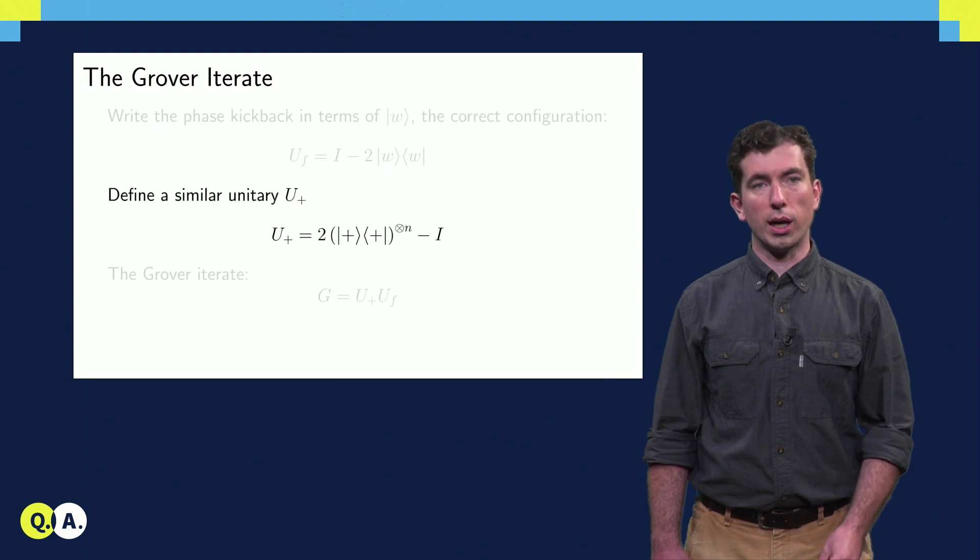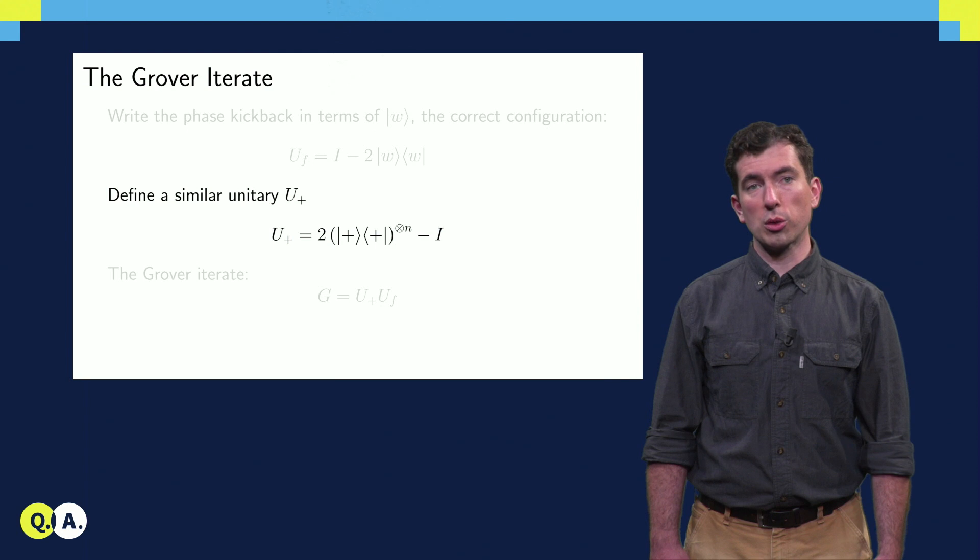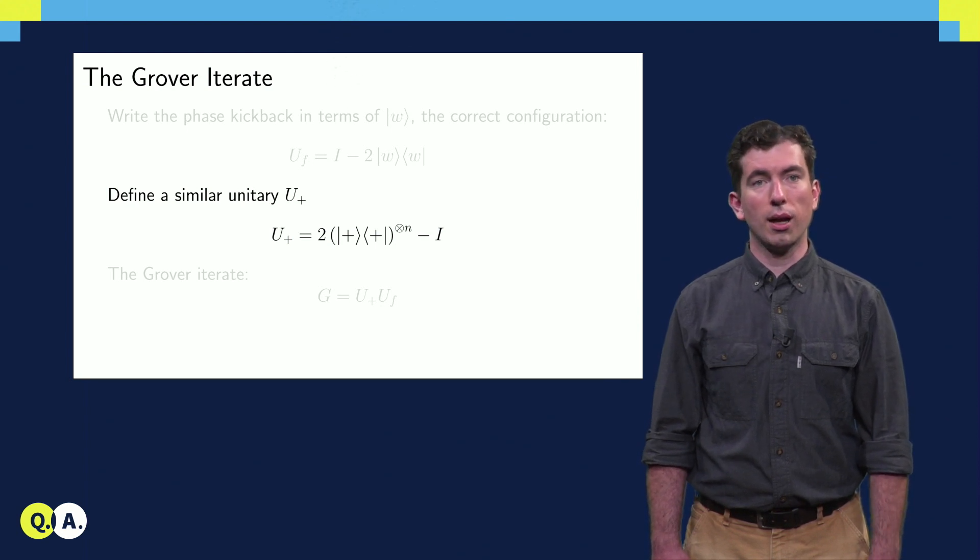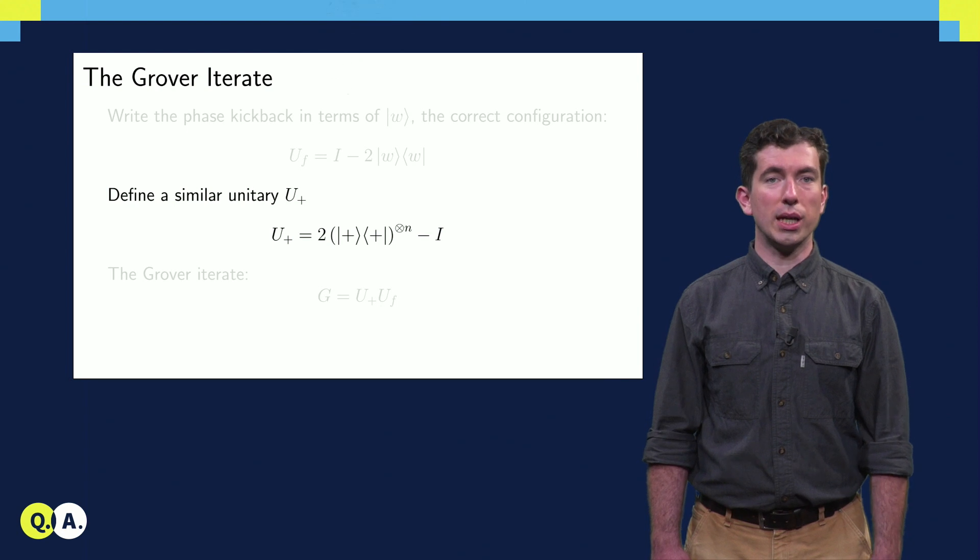We can also define another unitary U+, that does almost the same thing, except that it acts as the identity on the all-plus state, and applies a minus 1 phase to any state orthogonal to the all-plus state in the X basis.